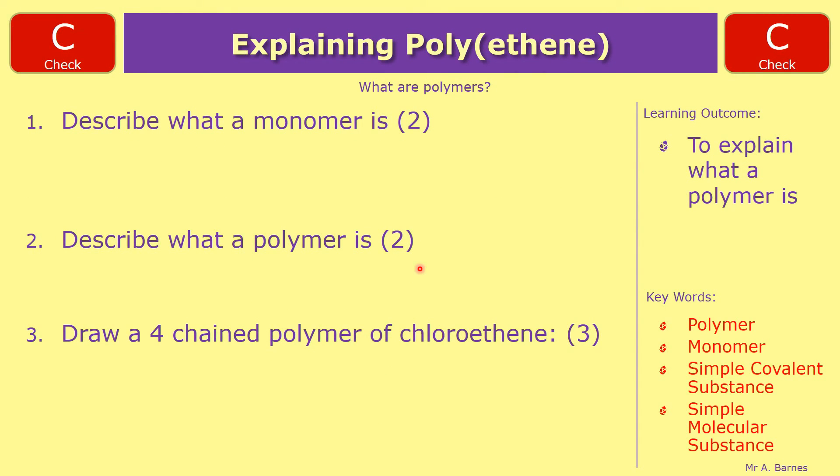Okay let's have a look then. So the first one describe what a monomer is. The key thing there is it's a molecule or alkene that can be bonded together to form a polymer.